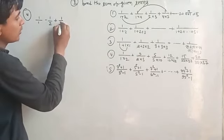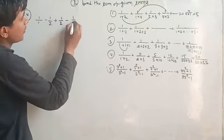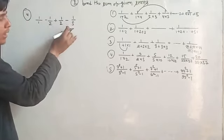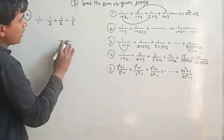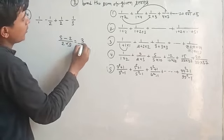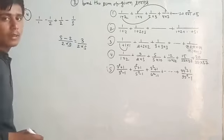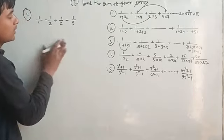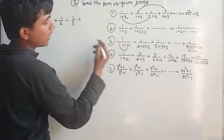1 upon 2 minus 1 upon 5. If I take these 2 into 5, then 5 minus 2, 3 upon 2 into 5. That is the same thing. I will do the same work here.